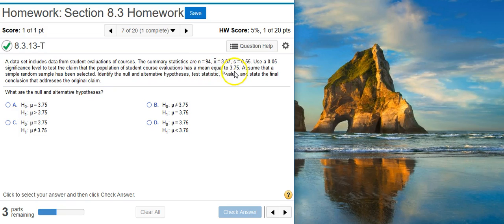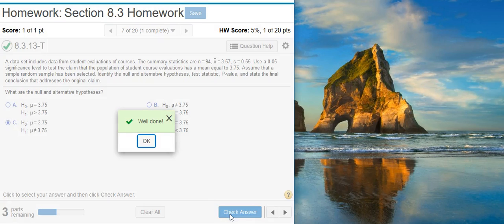Here we say the mean is equal to 3.75. The complement of being equal to is being not equal to. So that's going to be our alternative hypothesis. Mu is not equal to 3.75. This is answer option C. I check my answer. Well done!